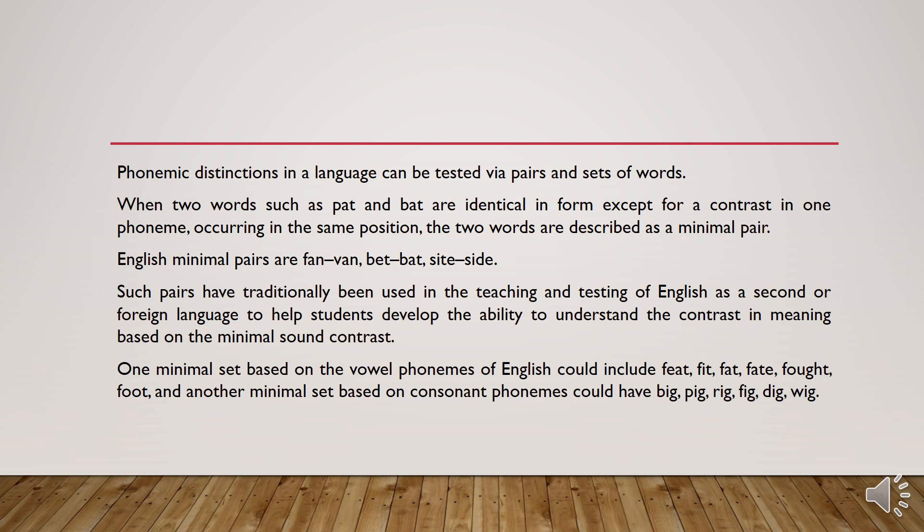When a group of words can be differentiated — each of them observed by changing one phoneme always in the same position in the word — then we have a minimal set. For example, one minimal set based on vowel phonemes of English could include: fate, fit, fat, fate, fought, foot.